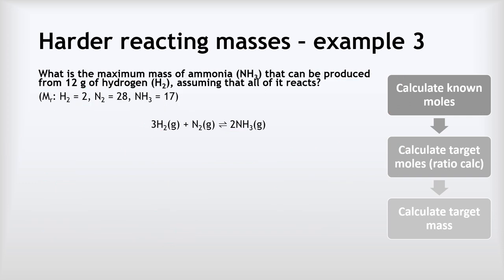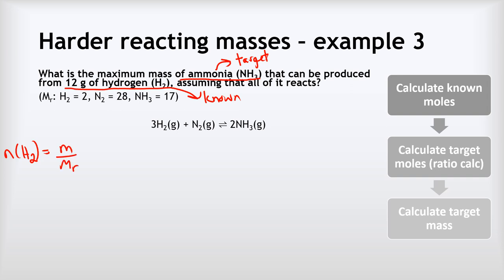Example three, a bit harder. What is the maximum mass of ammonia NH3 that can be produced from 12 grams of hydrogen H2? Ammonia is our target and H2 is our known substance. The number of moles of H2 equals mass over Mr: 12 divided by 2 gives us 6 moles of hydrogen. First step done.